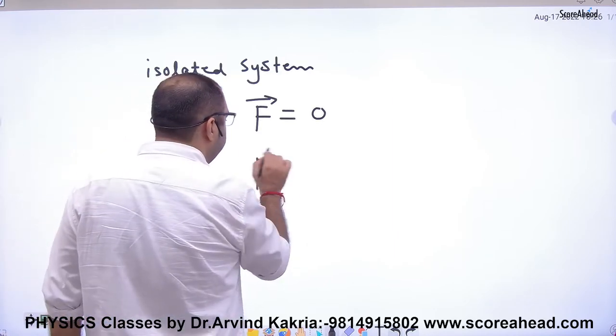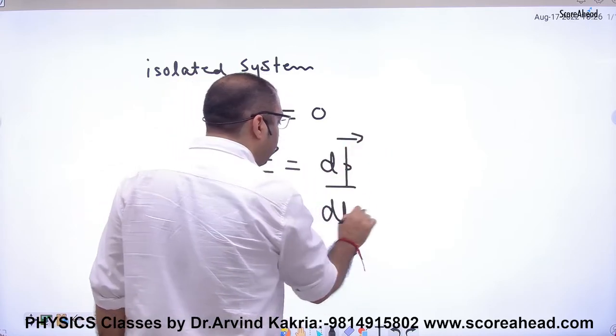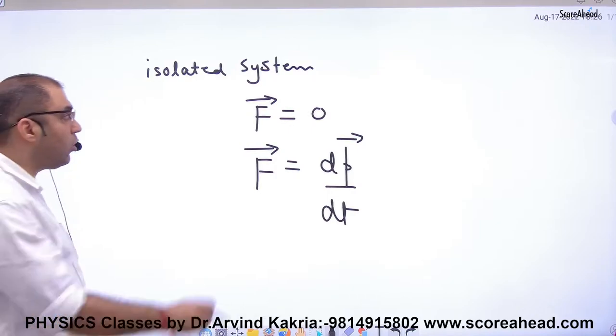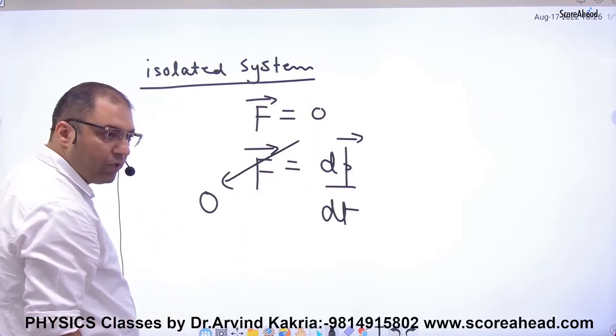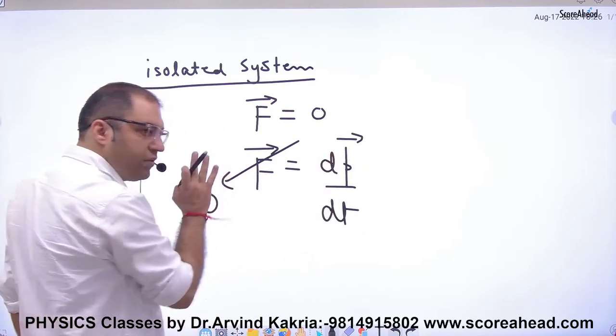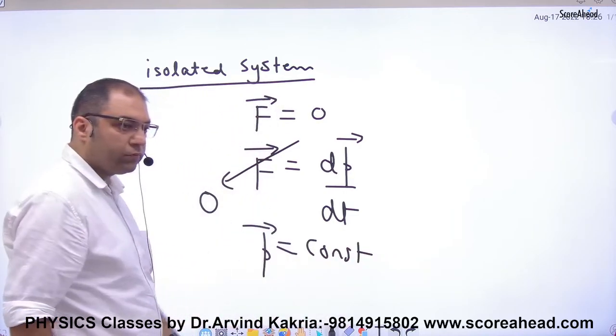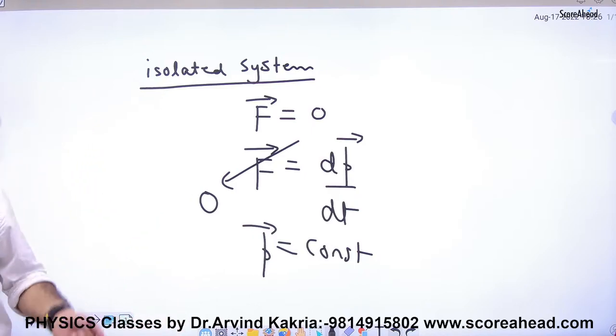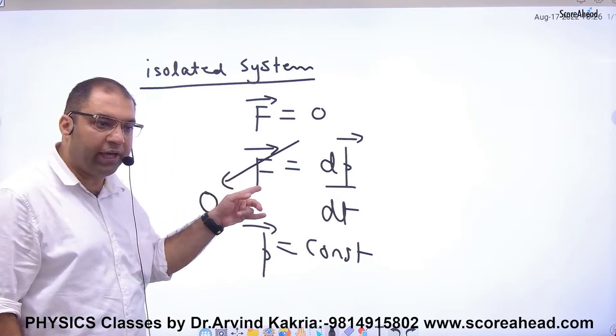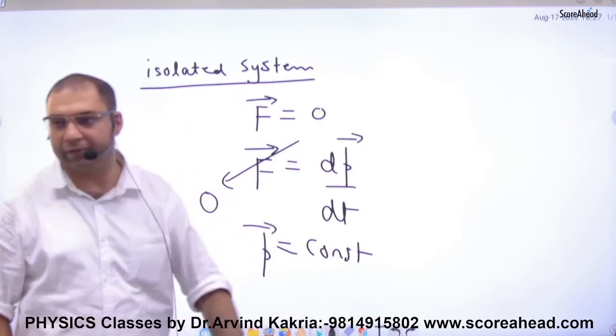But Newton's second law says force is equal to dp by dt in vector form. P is a vector, F is a vector. So for isolated system, where I wrote F is zero, P's differentiation is zero. That means P must be a constant. If P is constant, then its differentiation is zero. So isolated system is that system on which external force is zero, and that system's total momentum remains constant.